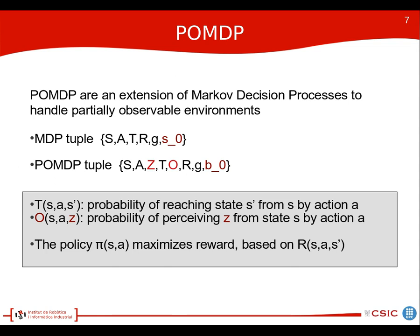Partial Observable Markov Decision Processes are an extension of Markov Decision Processes to handle partially observable environments. The main difference is that we have a set of observations in addition to the set of states and actions. We also have an observation matrix that translates from state and action to observation, giving us a model of the probability of perceiving things, alongside a model of acting on the world and reaching another state as in MDP.